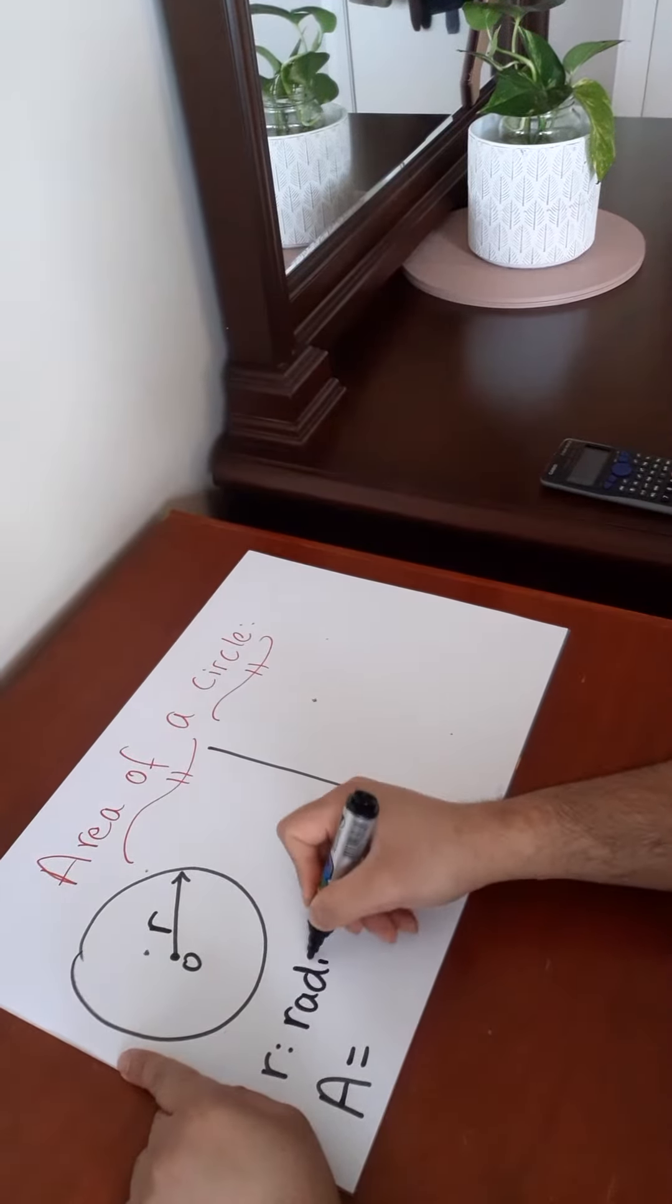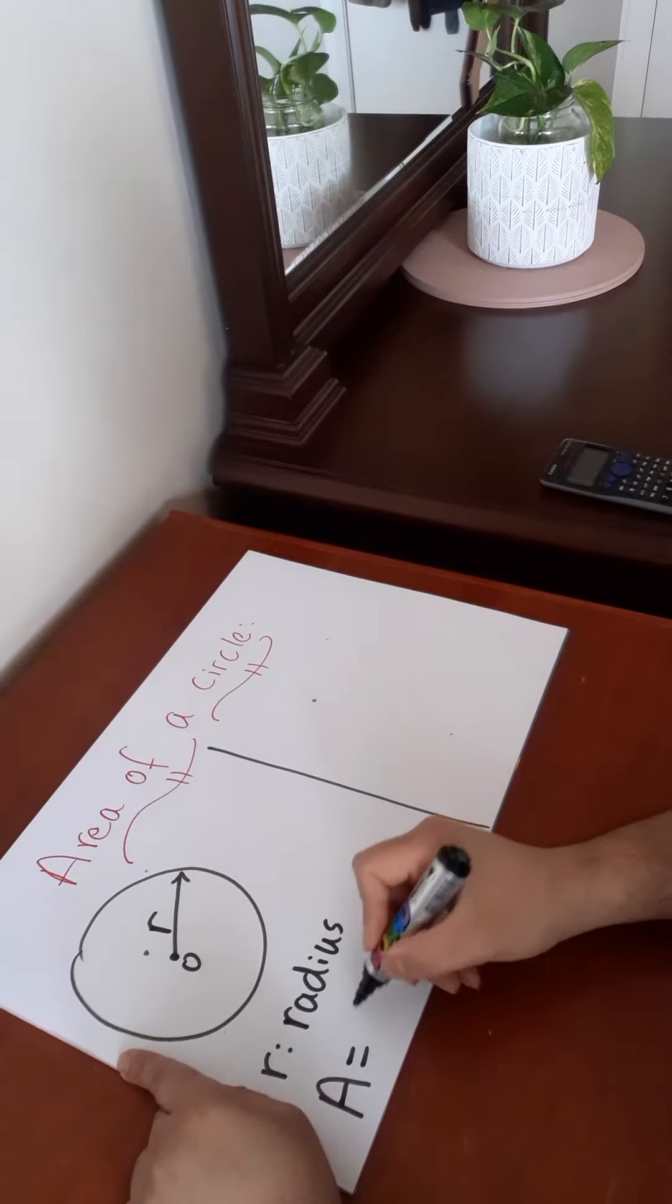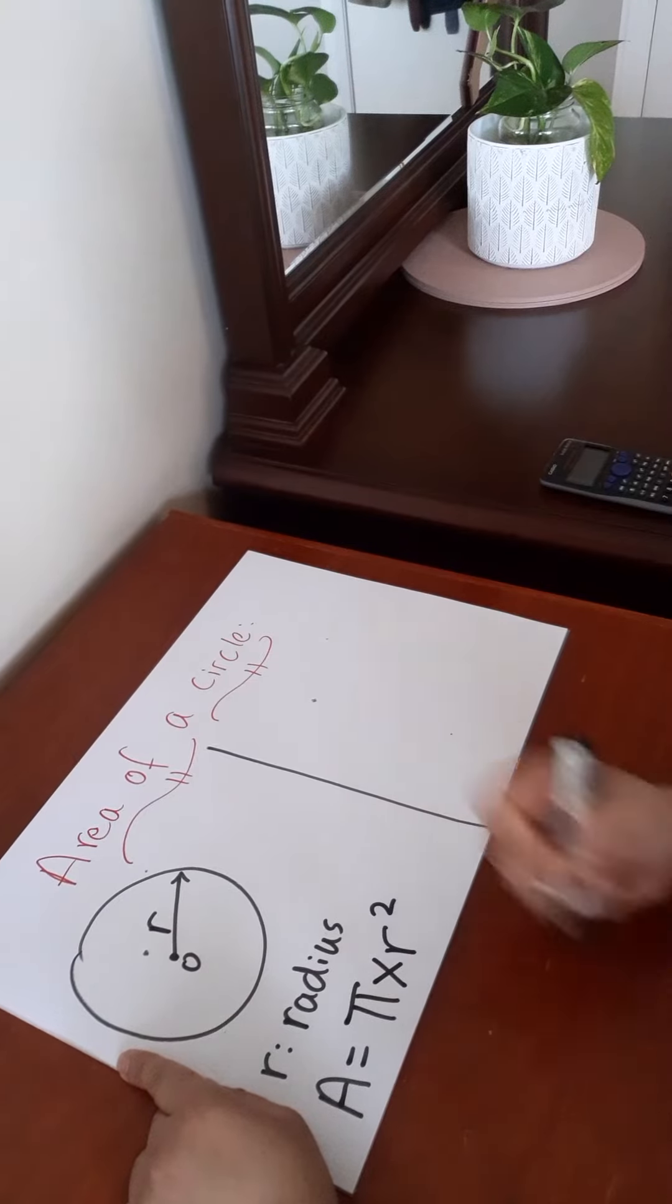So I'm just going to write this radius. Now the formula to find the area of a circle is area equals pi times R squared.